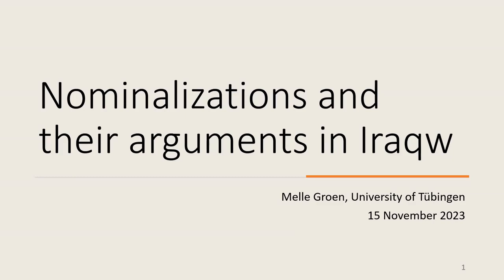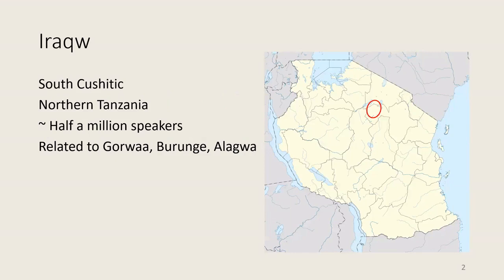Thank you very much, and thank you all for having me. Today I will talk about nominalizations and their arguments in Iraku. Iraku is a language that belongs to the South Cushitic branch of the Afro-Asiatic language family, and it's spoken in Northern Tanzania in the region shown on this map. There are roughly half a million speakers, and the language is quite closely related to other Cushitic languages in the area, such as Gorwa, Burunga, and Alagwa.